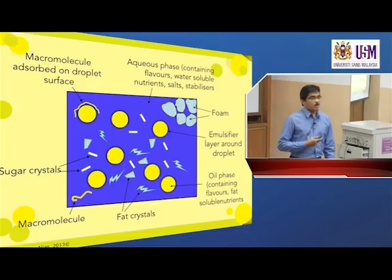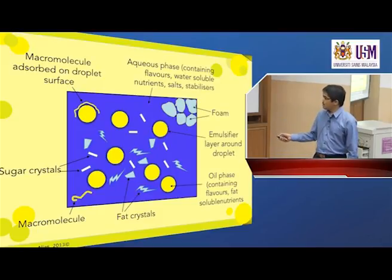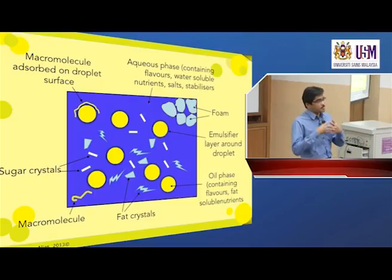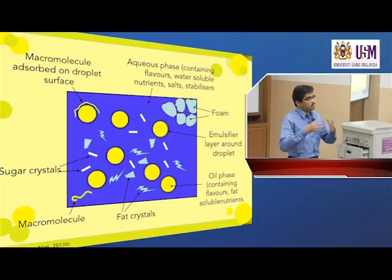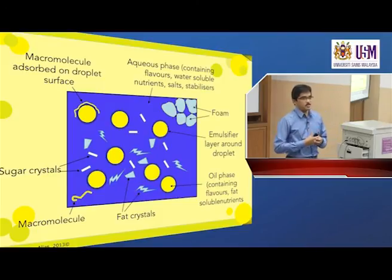If you want to have a good stable foam, we do not want the dispersed phase droplets to come close together. We do not want them to touch each other, stick to each other, and finally merge. Because when that happens, the emulsion will be destabilized, the foam would collapse, and you will not get a good ice cream.